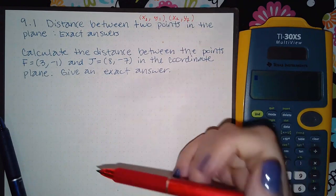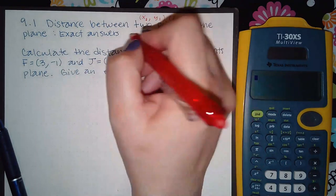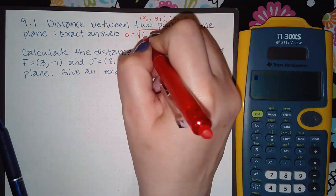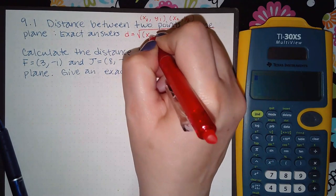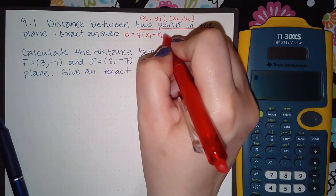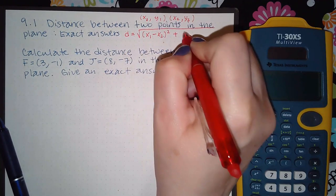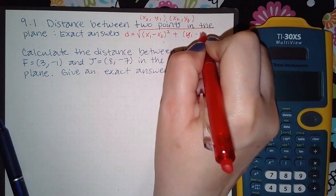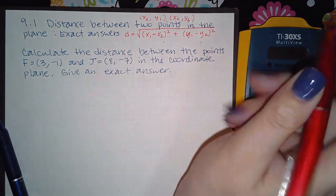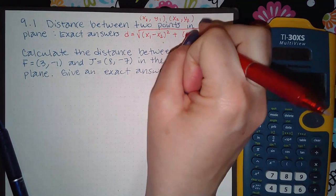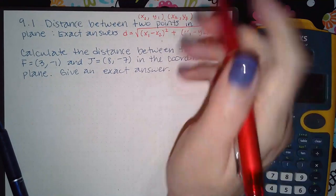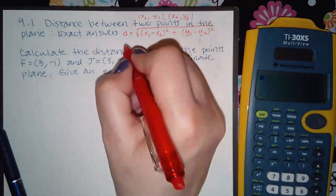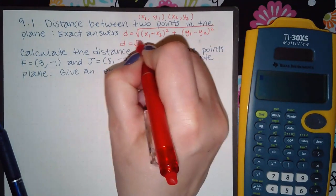Now the distance formula is the square root of (x1 minus x2) squared plus (y1 minus y2) squared. Depending on what book you're using and ALEKS itself has its own tutorials, you might see the formula like this or you could see the formula like this.